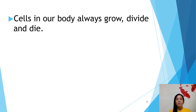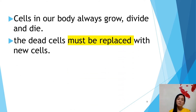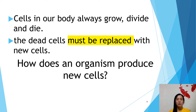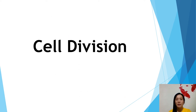The cells in our body always grow, divide, and die. The dead cell must be replaced with the new cell. So the question is, how does an organism produce a new cell? It is through cell division.